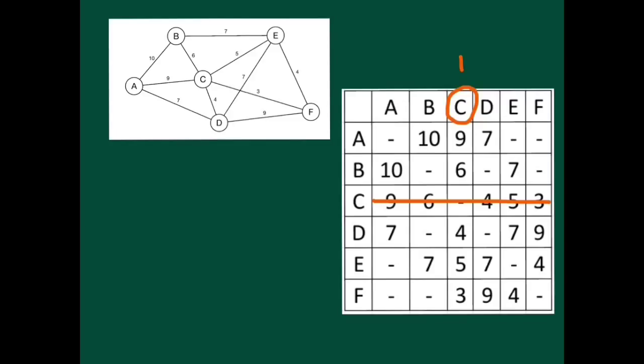Now we find the minimum weight that hasn't been deleted under that column. So on the C column, that's the 3. Circle that. That's in F.